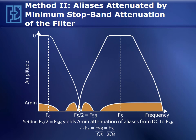The second method does not allow aliases to fold back in the signal region nor in the transition region. All aliases are attenuated by the minimum stop band attenuation of the filter. This condition requires setting the sampling frequency over 2 equal to the stop band frequency, yielding the cutoff frequency equal to the sampling frequency divided by 2 times the shape factor of the filter.